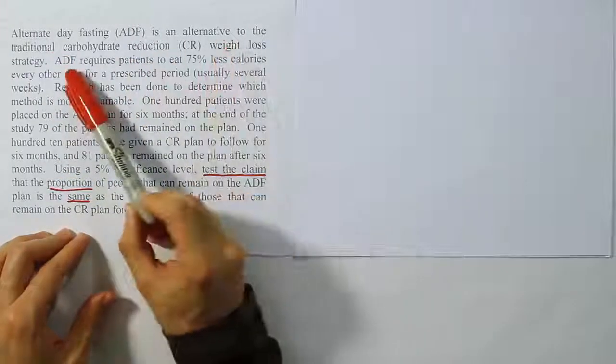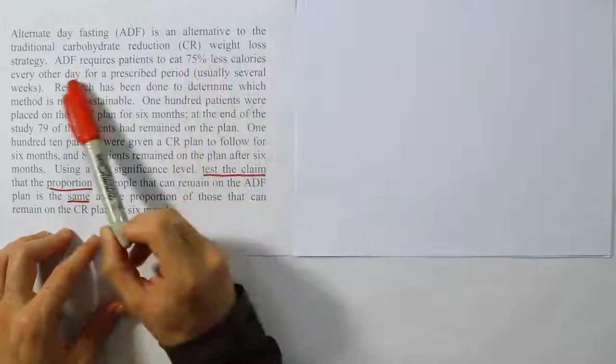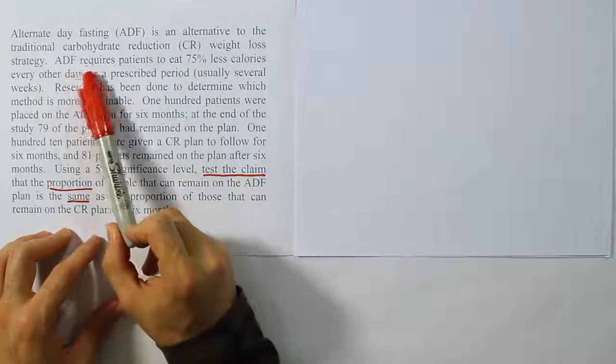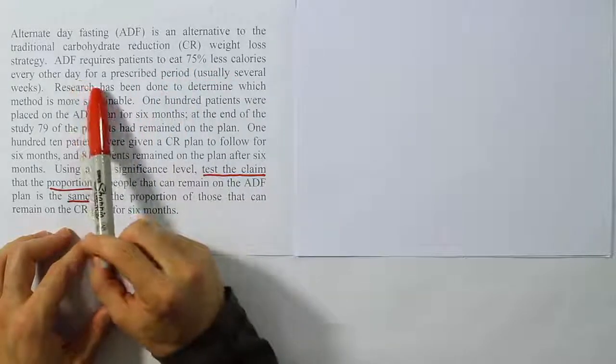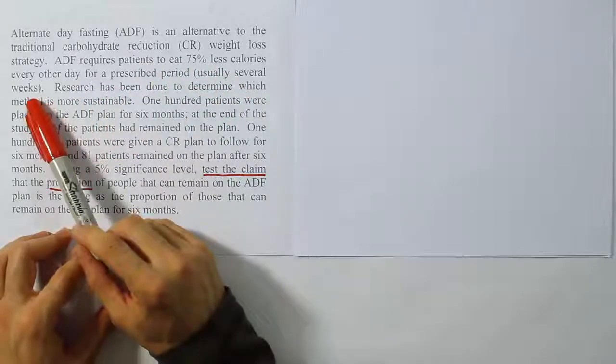Alternative day fasting is an alternative to the traditional carbohydrate reduction weight loss strategy. Alternative day fasting requires patients to eat 75% less calories every other day for a prescribed period, usually several weeks.